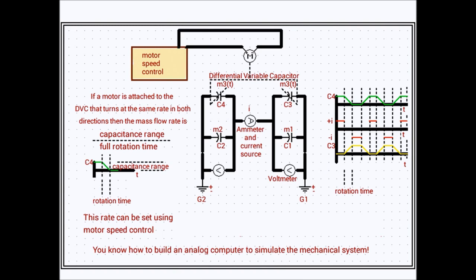That current stays on for its desired time. And at the end of that time, the motor rotates the shaft of the differential variable capacitor. So that now, as the capacitance C4 goes to zero, the capacitance C3 goes to the maximum capacitance value at the same rate.